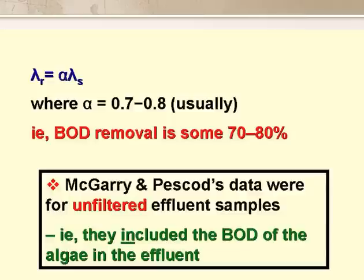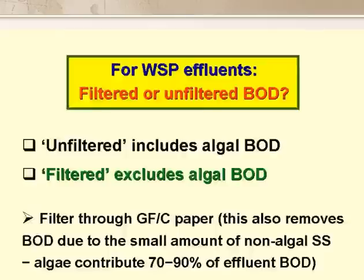The effluent BOD data that McGarry–Pescod used were obtained from unfiltered samples — that is, they included the BOD of the algae in the effluents. This raises the question: should we use filtered or unfiltered BOD for pond effluents? Unfiltered BOD includes the algal BOD, and filtered BOD excludes it. We filter the effluent sample using the same filter paper as for measuring suspended solids. This removes non-algal suspended solids, but introduces only a small error, as algae contribute somewhere between 70 and 90% of the BOD in pond effluents.